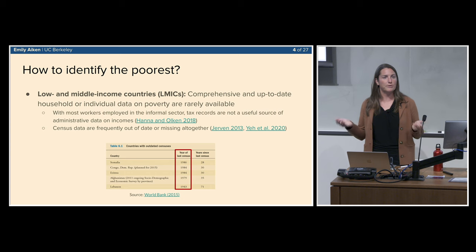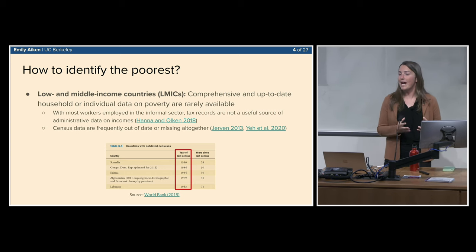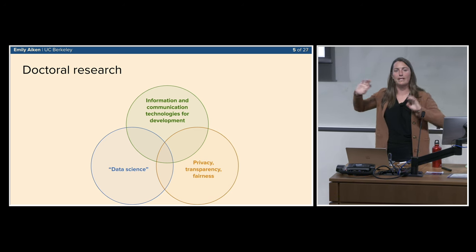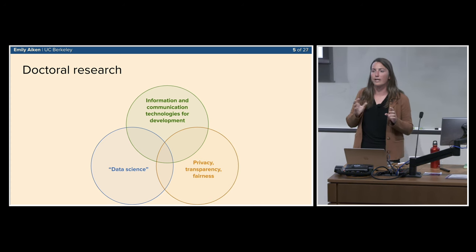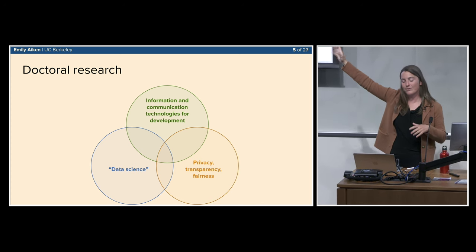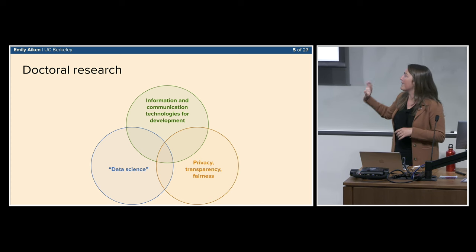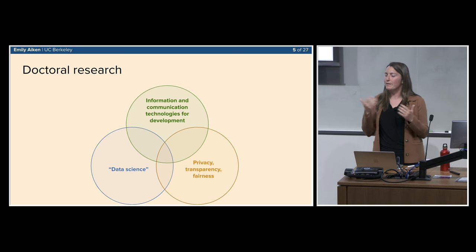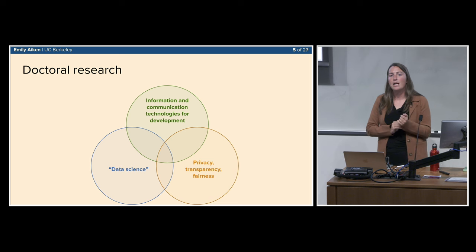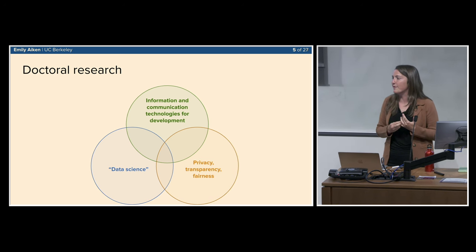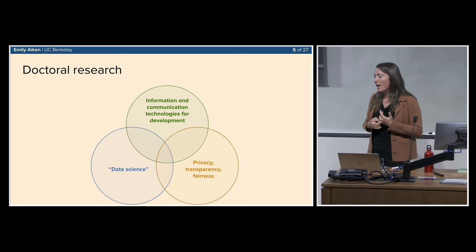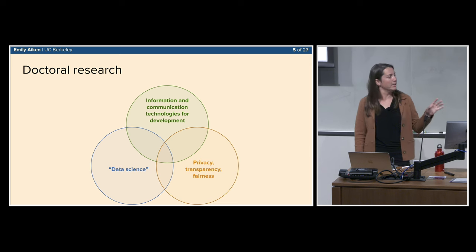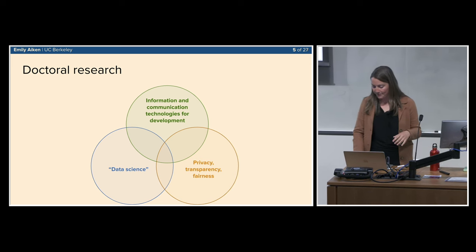Many countries want to give out aid but don't know which households are wealthy and which are poor. My research seeks to fill this data gap leveraging novel digital data sources and advances in machine learning. Broadly, my work falls into three overlapping buckets: poverty measurement and targeting as an ICTD question, data science methods rather than the traditional HCI side, and increasingly AI ethics — privacy, transparency, and fairness — which has become really important to me.